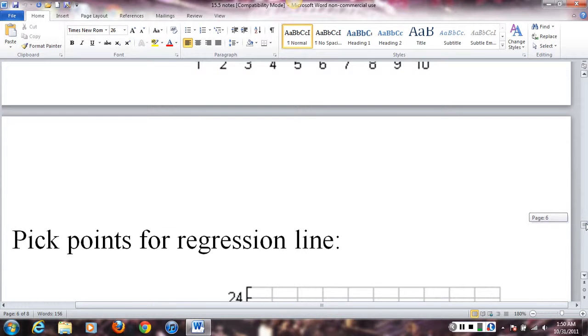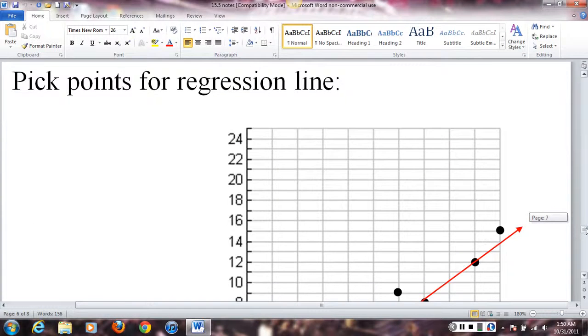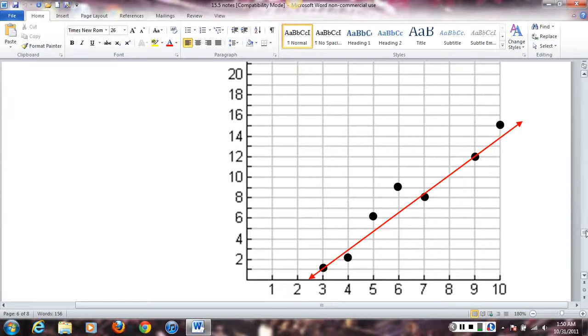Once we plot the points, I would want you to pick points for the regression line. In other words, pick two. Two points that you'd feel if I were to draw a line through them would give you a good correlation, would give you a good line of best fit. In other words, a line that comes as close to as many points as possible. I picked two here that I thought would make a good choice. Obviously, there are more.